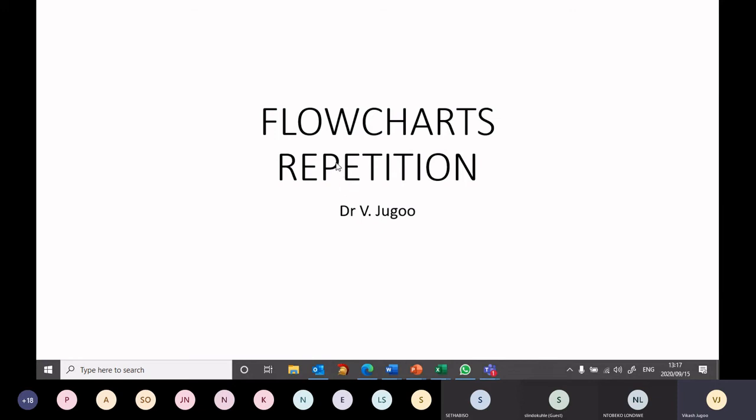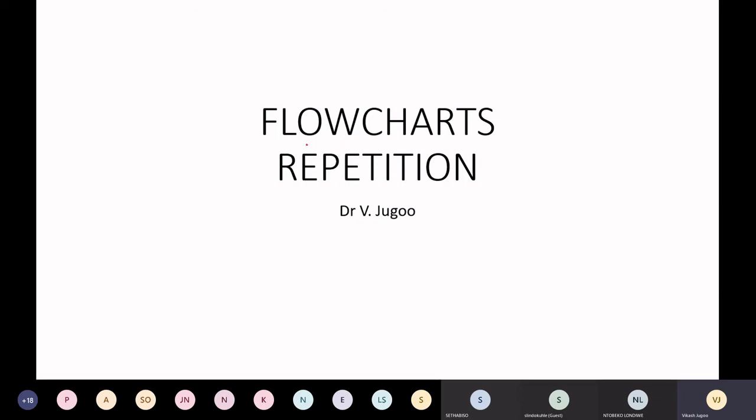We are looking at flowcharts, but in particular we're going to be looking at repetition. Yesterday we looked at selection and we said with selection you go down a pathway. You go down a pathway and then at some point you have to either go in one direction or you have to go in another direction, and that depends on a condition.